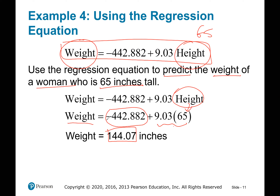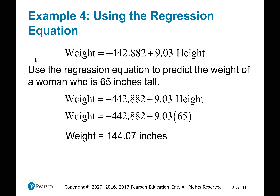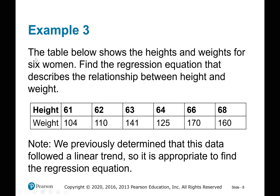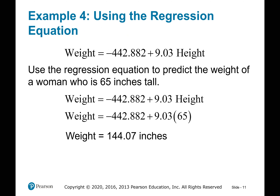You compute 9.03 times 65 and then add the negative number −442.882, and you get approximately 144.07. So we can predict that a woman who is 65 inches tall will weigh approximately 144 pounds.